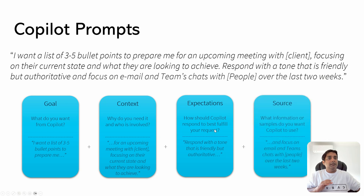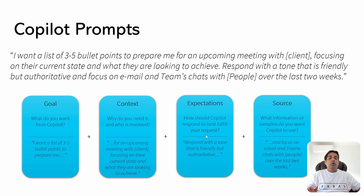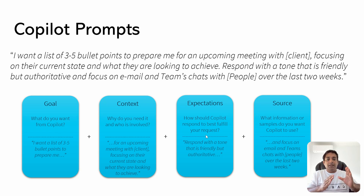And the fourth part is the source. You need to define what information or samples you want Copilot to use. So here, the example is 'focus on email and Teams chat' — very specifically, email and Teams chat with particular people. You can include people's names, over the last two weeks. That is also very definitive — I only want the Teams chat and the email from the last two weeks. So this whole prompt is a combination of these four parts: the goal, the context, the expectations, and the source.